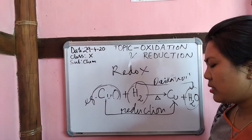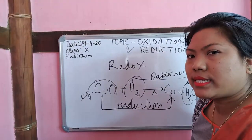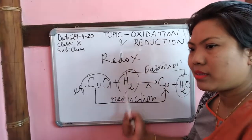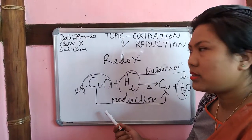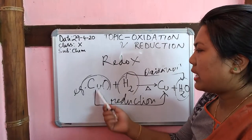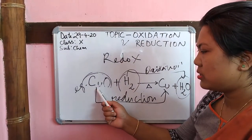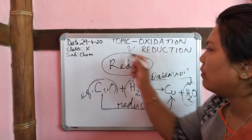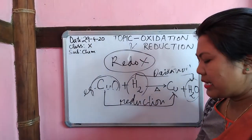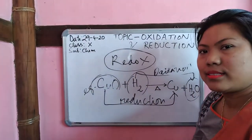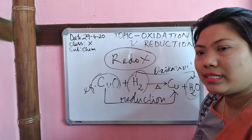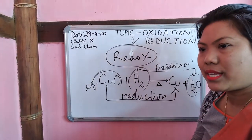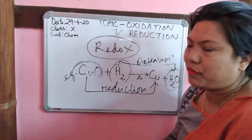Such reactions — where in a single reaction both reduction and oxidation occur simultaneously — are called a redox reaction. In most reactions you may find that where oxidation happens, another reactant undergoes reduction. When both oxidation and reduction occur in the same reaction, that reaction is an example of a redox reaction. In higher classes you will learn about redox reactions and their types in a more refined way.